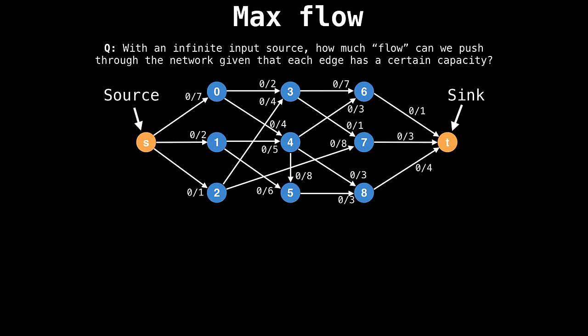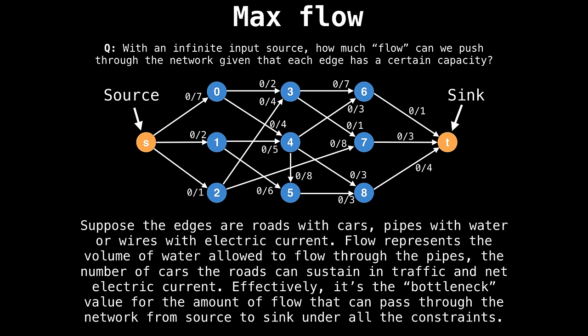The maximum flow problem asks, with an infinite input source, how much flow can we push through the network without exceeding the capacity of any edge. And it's not all obvious how one should figure that out.